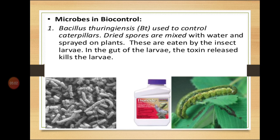This is very important from your board exam point of view — a short note on BT crop. The question has appeared repeatedly. The dried spores of BT are mixed with water and sprayed on plants. When insects such as larvae eat these plants, the cry protein toxin is released in the gut, the gut swells up, and the larvae are killed. In this way we are protecting plants such as cotton.